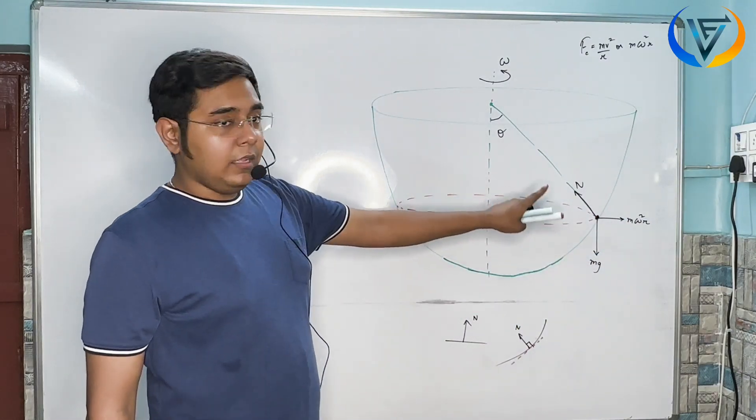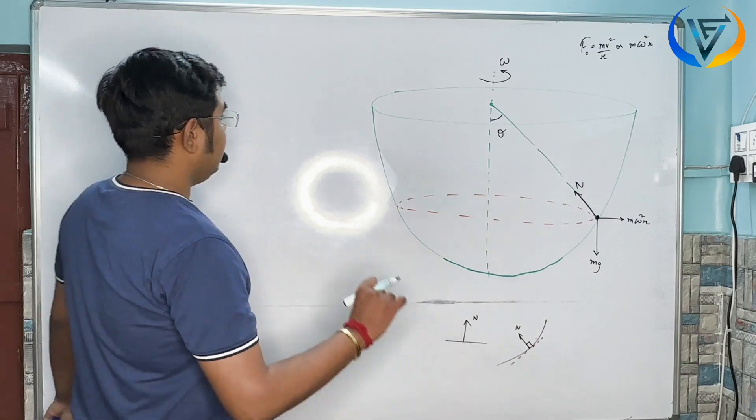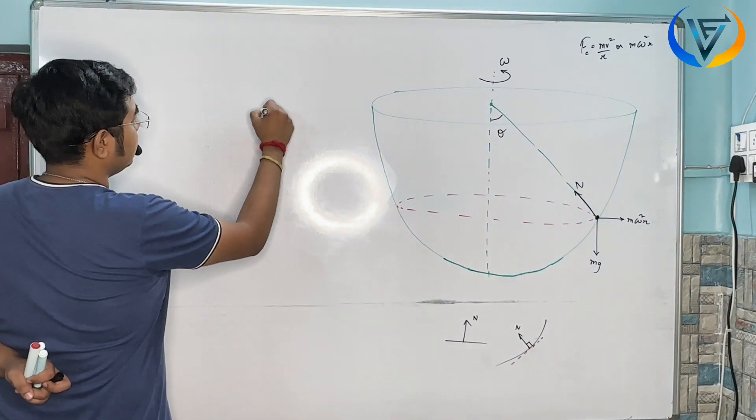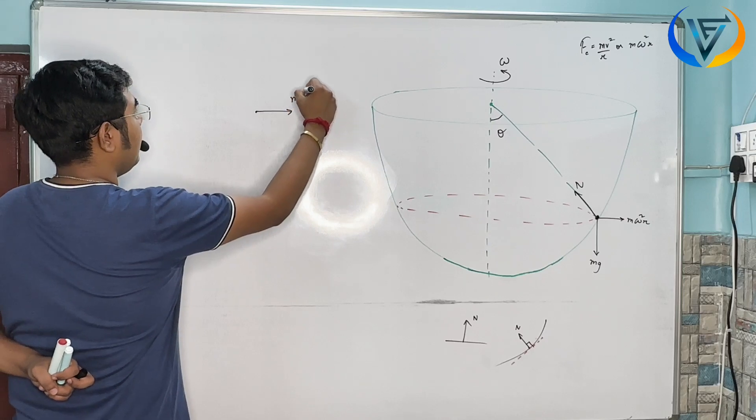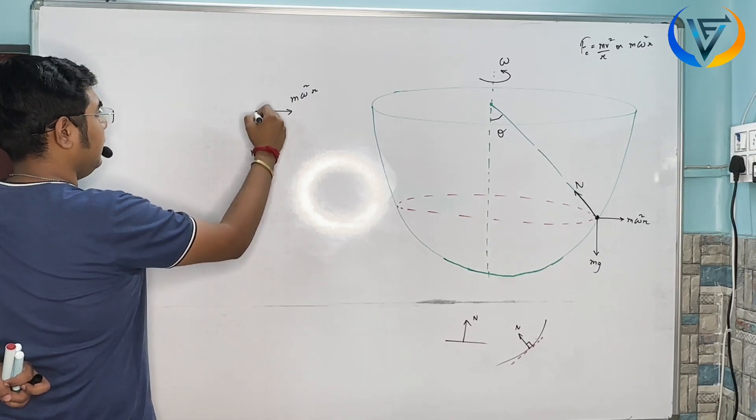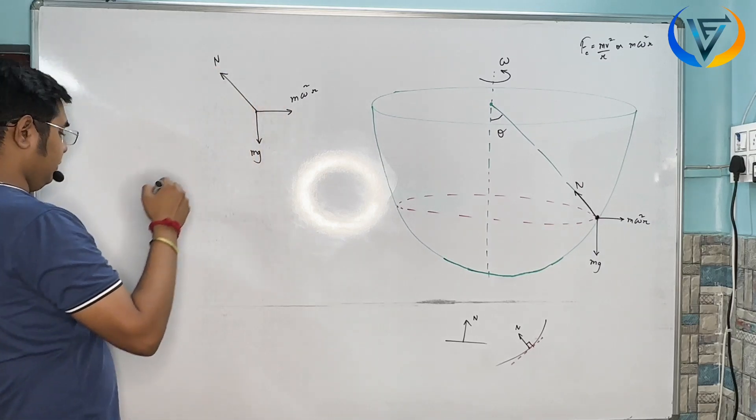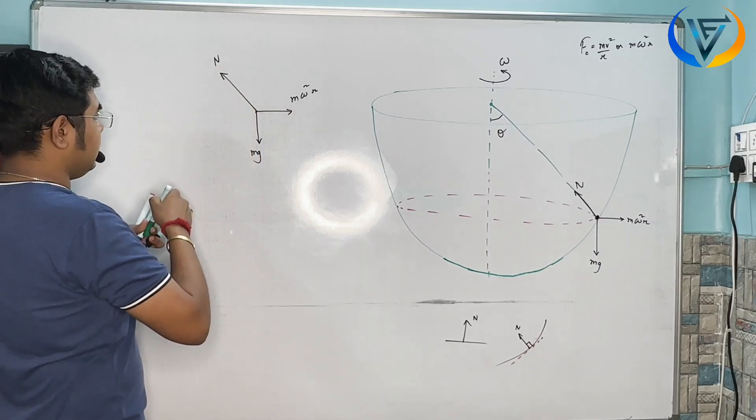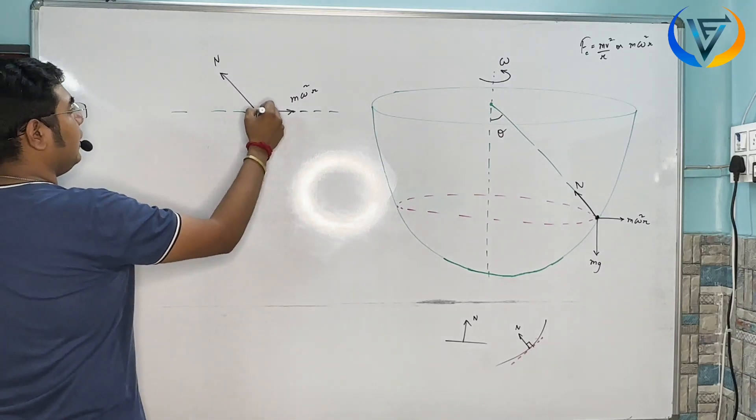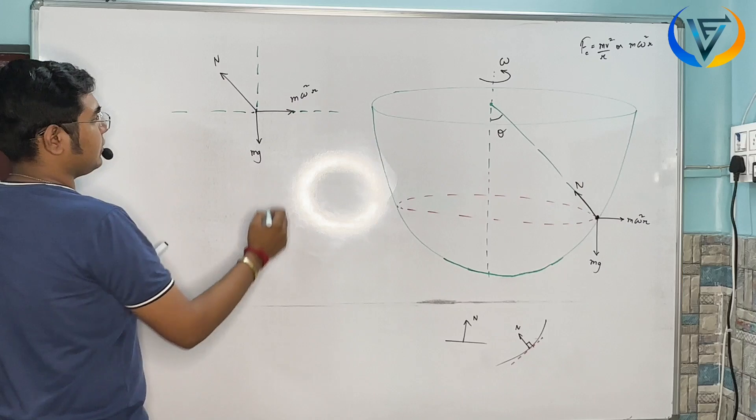This diagram shows the forces: M omega squared R (centrifugal), Mg (weight), and N (normal reaction force). I'll draw the x-axis and y-axis for resolving these forces.